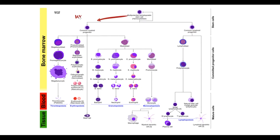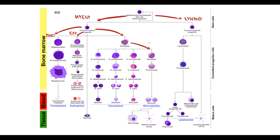To explain why mature cells are produced, we have to recall hematopoiesis. Hematopoiesis can generally be divided into myelopoiesis and lymphopoiesis. Myelopoiesis can be subdivided into erythropoiesis, from which red blood cells are produced; thrombopoiesis, where megakaryocytes and then platelets are formed; monocytopoiesis, where monocytes are produced; and granulopoiesis, where neutrophils, basophils, and eosinophils are produced.